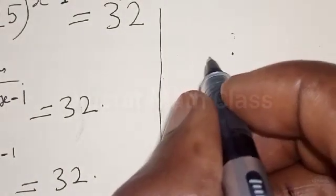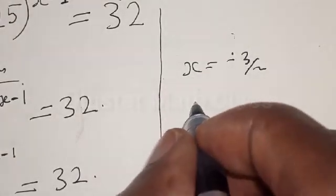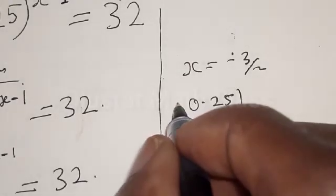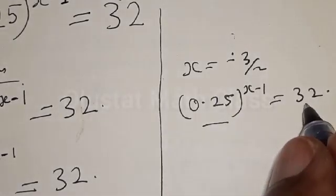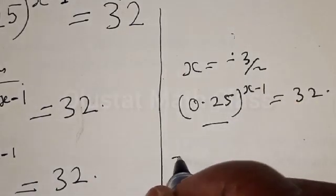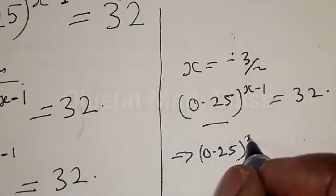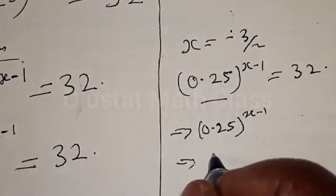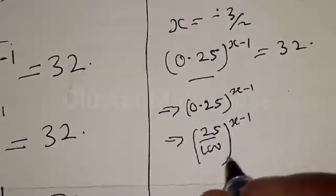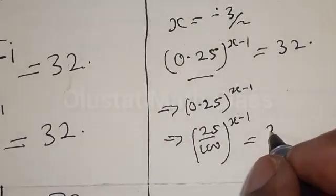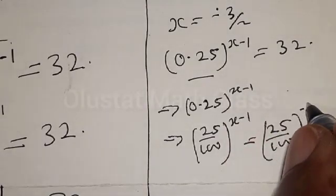We may also check to confirm our answer. We said s is equal to minus 3 over 2. The question is 0.25 raised to the power s minus 1 equal to 32. We want to verify this holds at s equals minus 3 over 2. Substituting, we have 0.25 raised to the power s minus 1, which is 25 over 100 raised to the power s minus 1, then substituting s gives 0.25 raised to the power minus 3 over 2 minus 1.